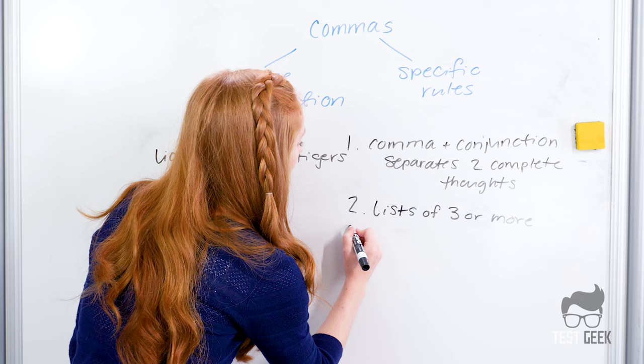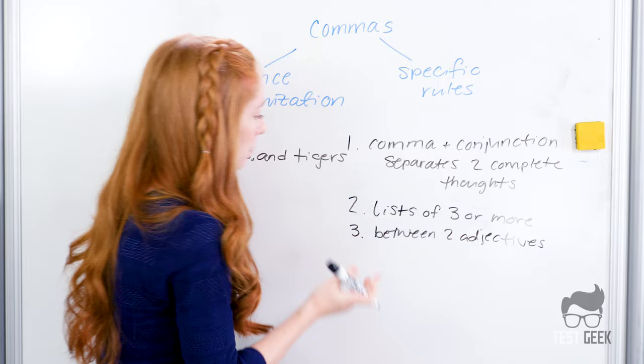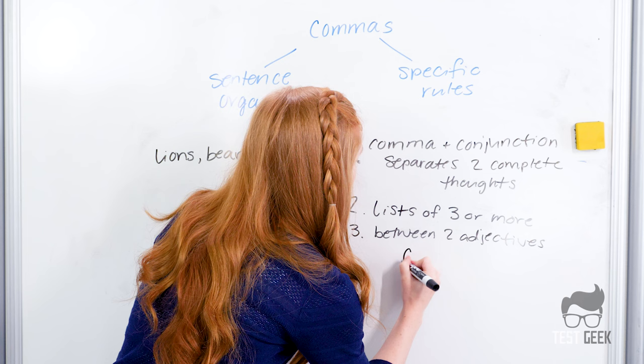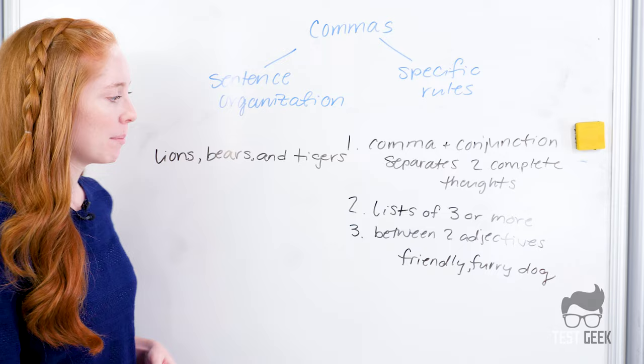The third rule is between two adjectives. So say we're describing a dog, and we want to say that dog is friendly and furry. We might say the friendly comma furry dog.